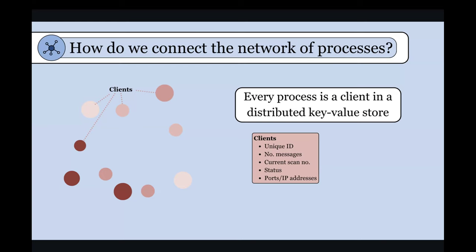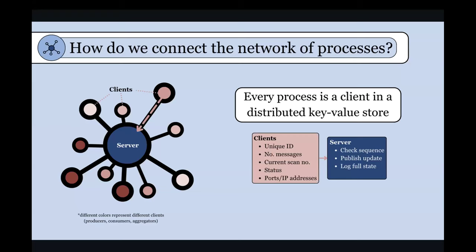And this distributed key value store is nothing fancy. It's just a bunch of clients sending messages to the rest of the network saying what their unique IDs are and what their status is, whether they're idle or streaming, and what their current scan number is. These kinds of state things for an individual client along with their ports and IP addresses. And so what happens when a client joins the network, it'll send a message to a centralized server. That centralized server tracks all of this state and receives messages, updates the global state, and then sends that state out to the rest of the clients.